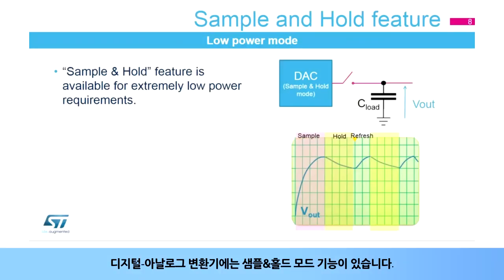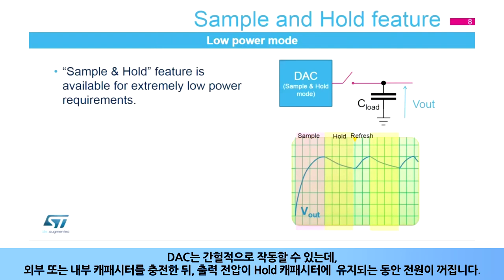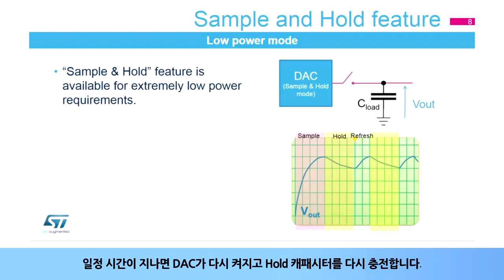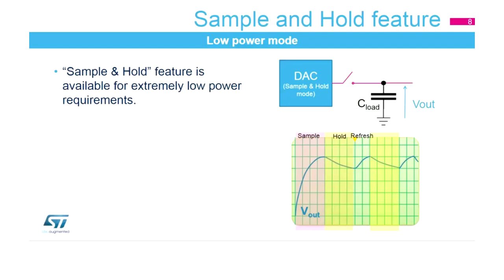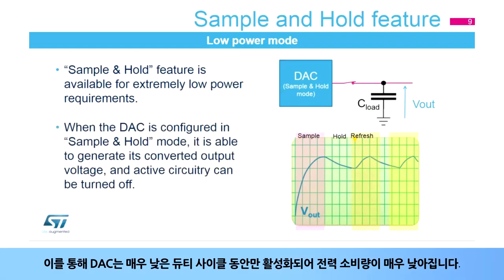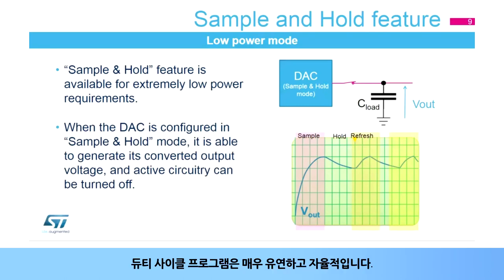The digital to analog converter has a sample and hold mode feature. The DAC can work intermittently, charge the external or internal capacitor, and be powered down while the output voltage is kept on the hold capacitor. After a certain period, the DAC is powered back on again and recharges the hold capacitor. By doing so, the DAC is only active during very low duty cycles, resulting in very low power consumption. The duty cycle program is very flexible and autonomous.